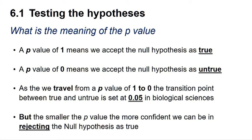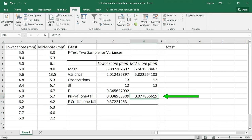So what is the meaning of the p-value? A p-value of 1 means we can accept the null hypothesis as true, whereas a p-value of 0 means we can accept the null hypothesis as untrue. As we travel from a p-value of 1 to 0, the transition point between true and untrue is set at 0.05 in the biological sciences. The smaller the p-value below 0.05, the more confident we can be in rejecting the null hypothesis. A p-value of 0.0779 is above our transition value of 0.05, which means the result is not significant and we cannot reject the null hypothesis, which states there is no difference between the variance of periwinkle shells from the lower and mid-shores. It tells us we need to do a t-test for data with equal variances.